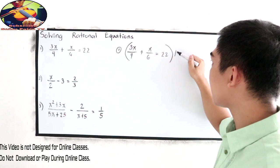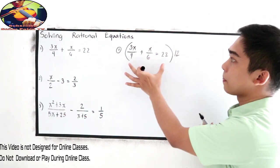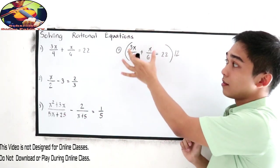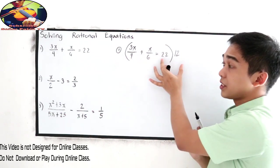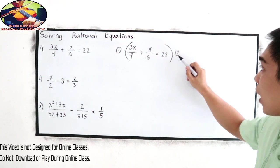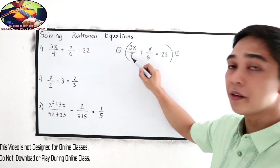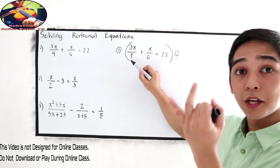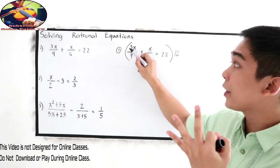And after getting our LCD, multiply it to our equation. Multiply it to the left side of the equation and the right side. 12 divided by 4, that is 3 times the numerator.